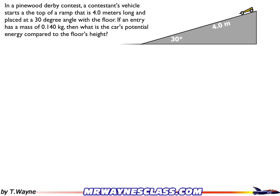Let's start with a quick look at this and list my givens. The length of the ramp is 4 meters long, and it's at a 30 degree angle with the horizontal. Now, I need a reference point for height. It tells me to compare it to the energy at the floor, so I'm going to call the floor a height of 0.